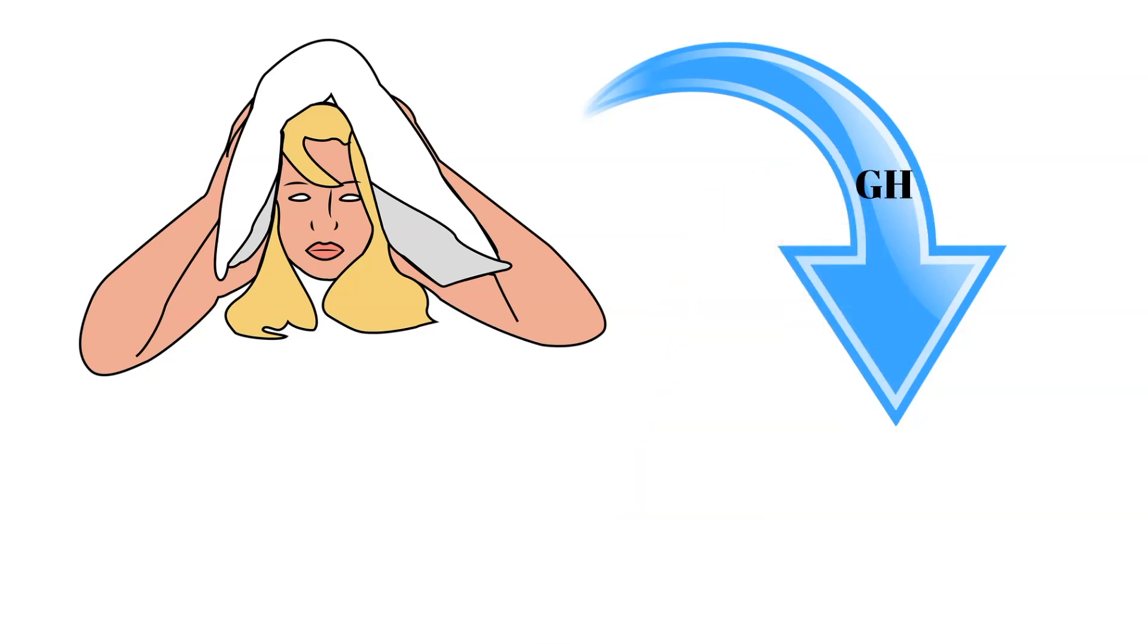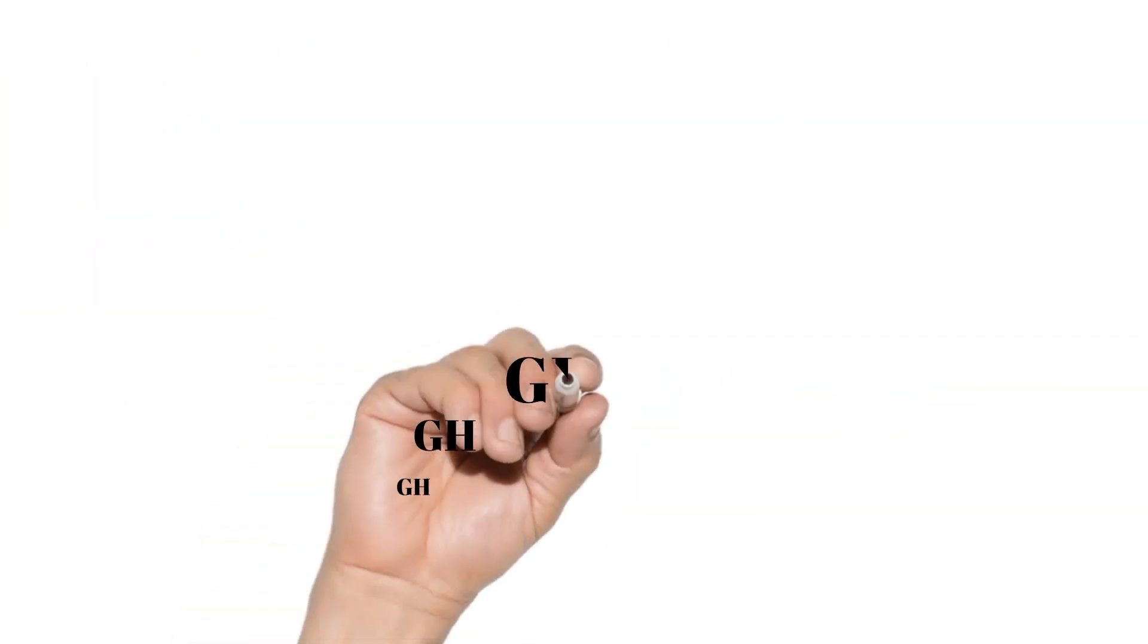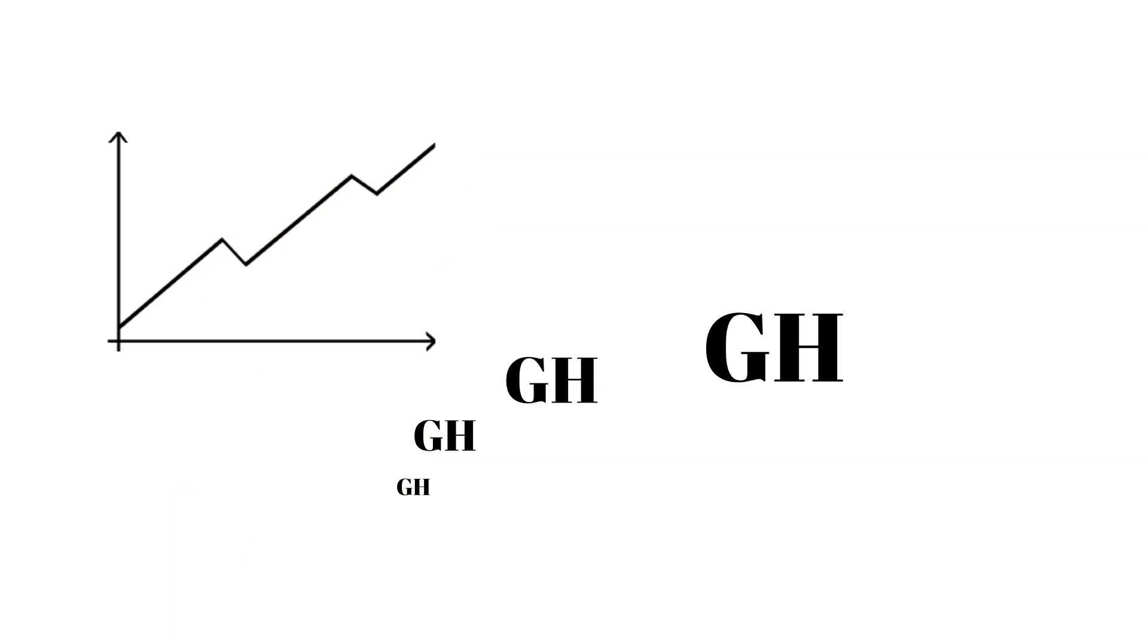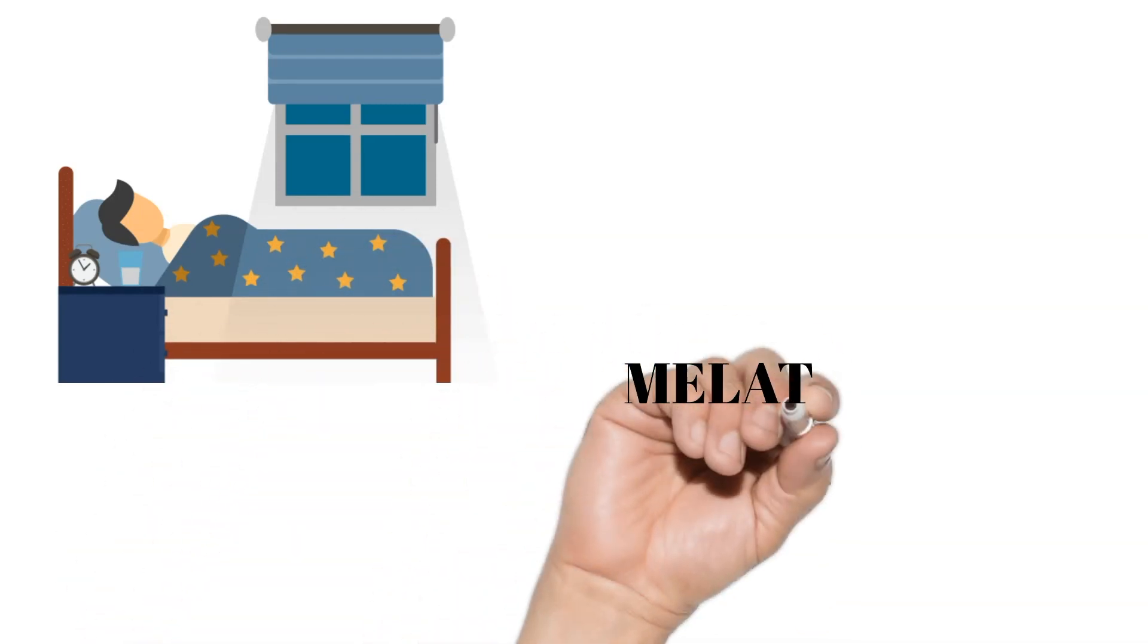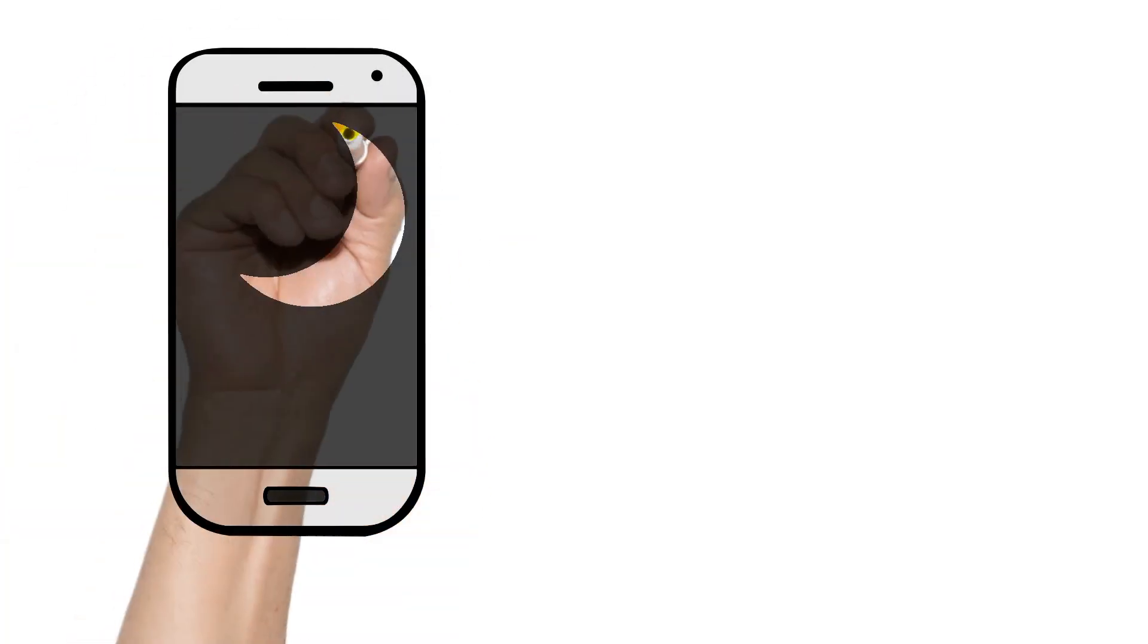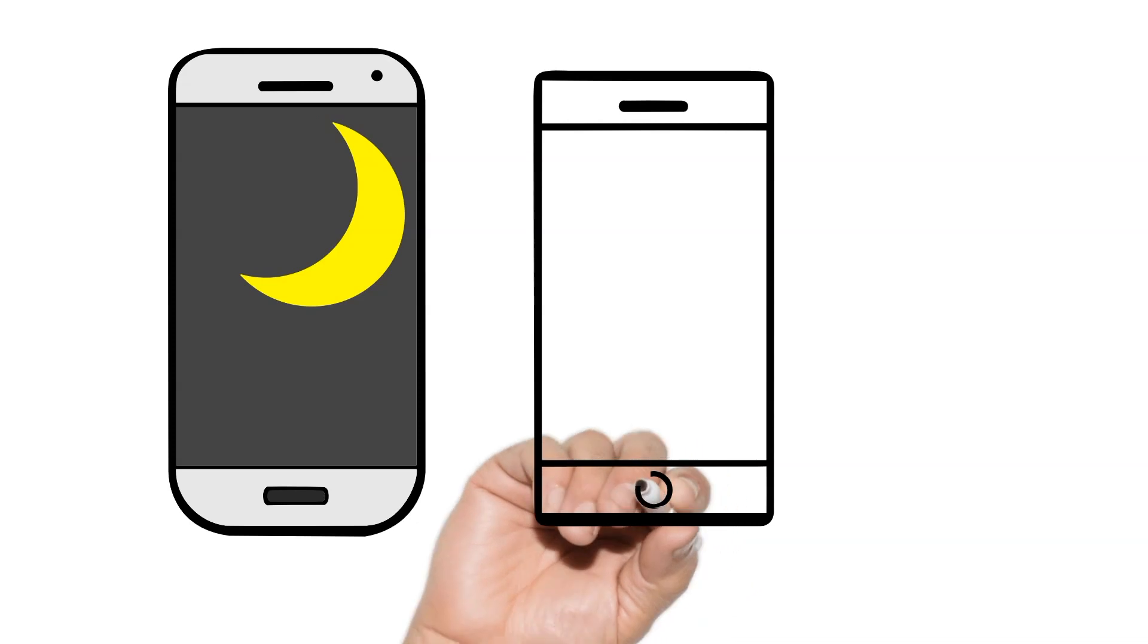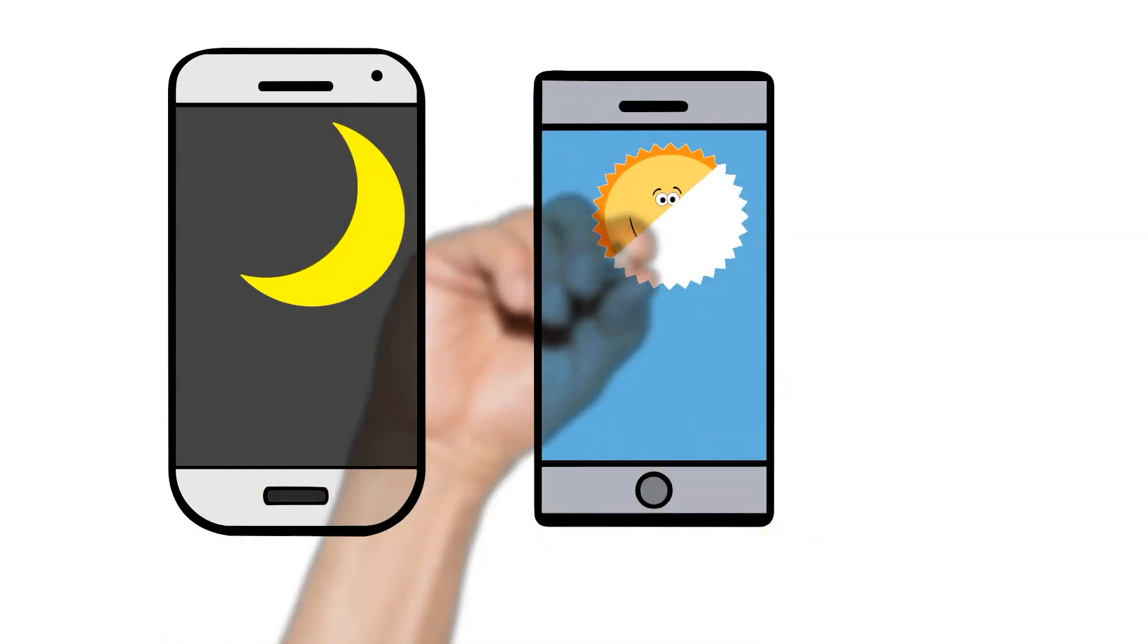So let's talk about how to increase growth hormone levels. First, when you go to sleep, make the room dark. Darkness increases the natural production of melatonin, which makes you go into deep sleep faster. If you have to use your phone, although I highly discourage it, put it on night mode. Bright screens decrease melatonin production.